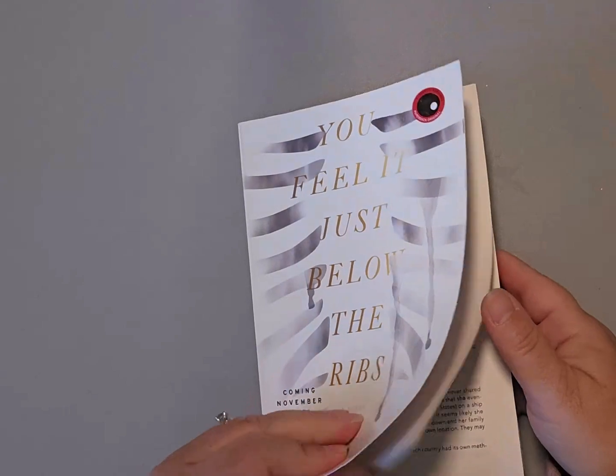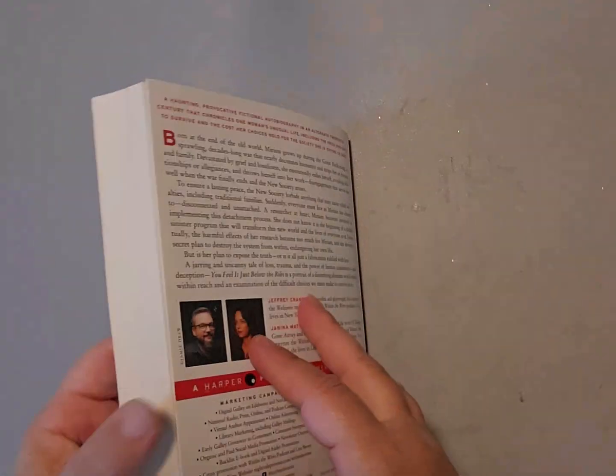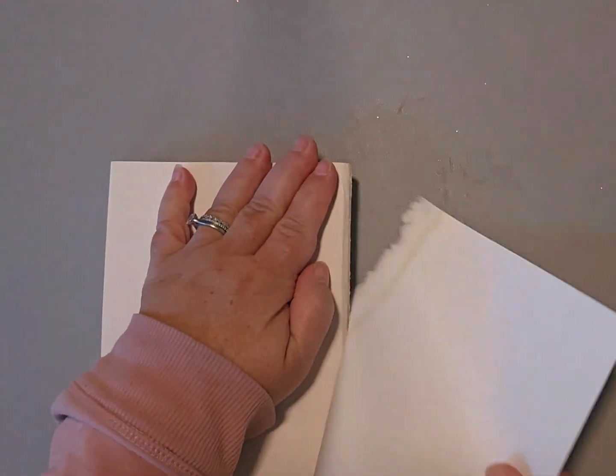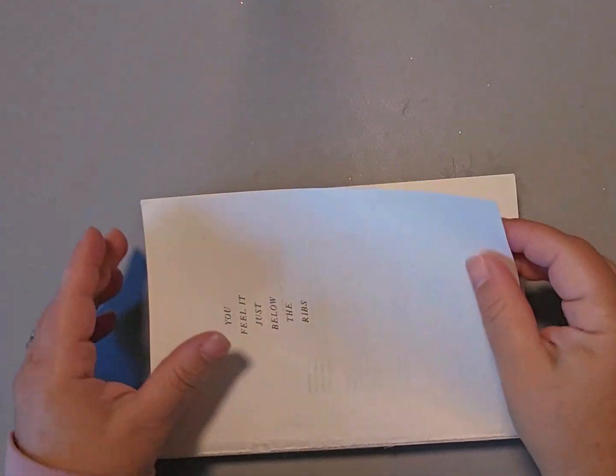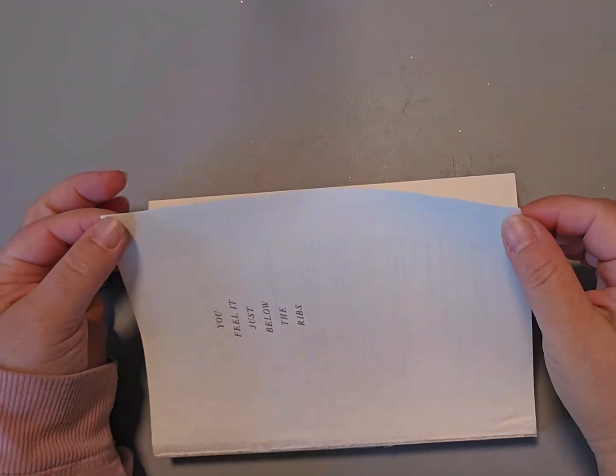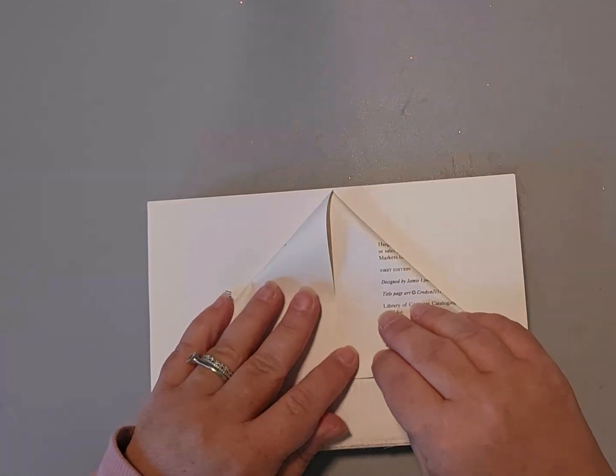The first thing you're going to do is go ahead and rip off the front cover and the back cover. Then you're going to take the top right and the top left and form a triangle. That is step one.